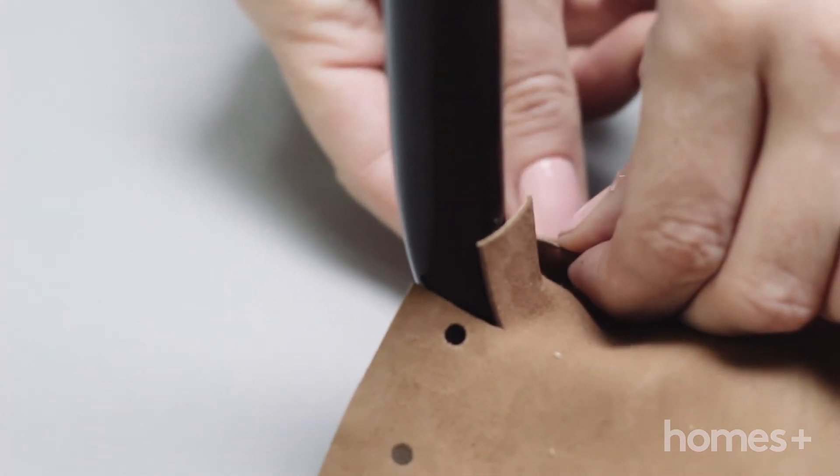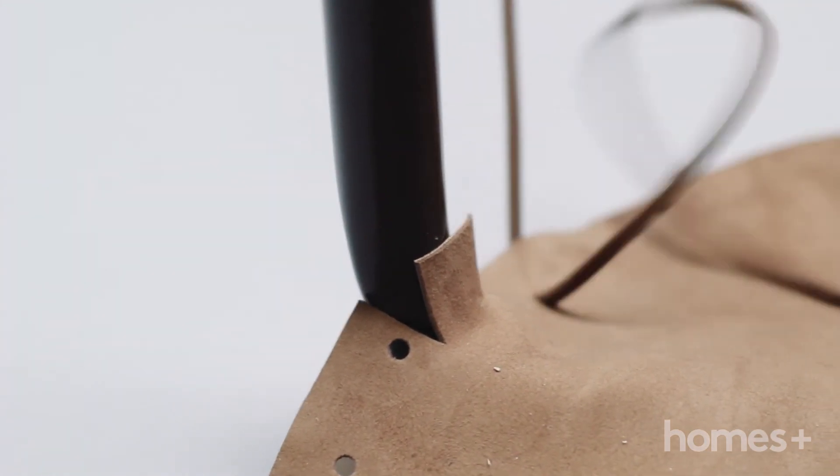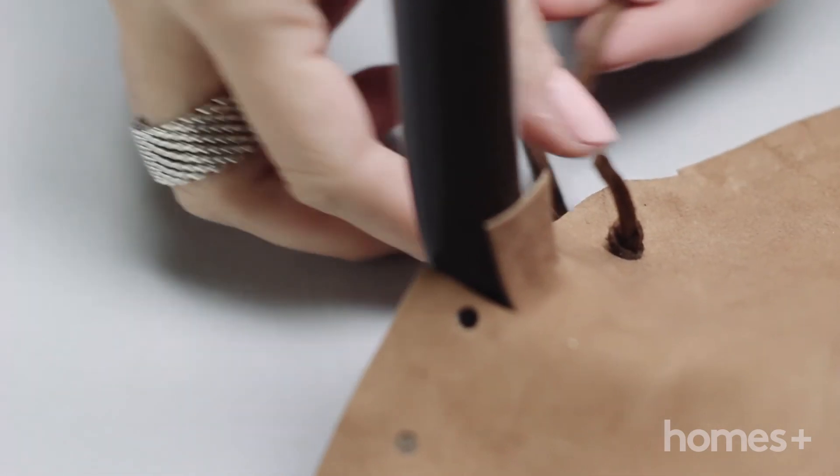Step 7: Flip your stool over and tie a loose knot towards the end of the suede cord, leaving a 5 centimeter tail. Then thread the cord through the holes and pull taut.